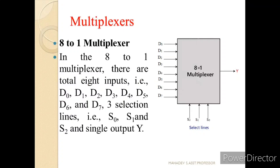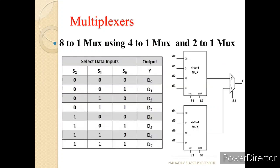Now let us understand the 8-to-1 multiplexer. As the name says, we have 8 input lines D0 to D7. To select these inputs, we have three select lines: S2, S1, and S0. The combination of S2, S1, and S0 selects the respective input D0 through D7 to the output. Looking at the functional table: when all select lines are 0, D0 is selected; combination 1 selects D1; combination 2 selects D2; combination 3 selects D3; and so on through D7.